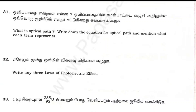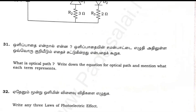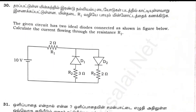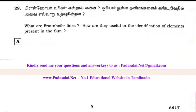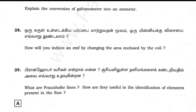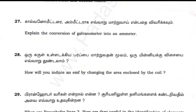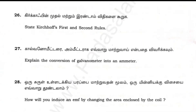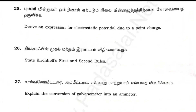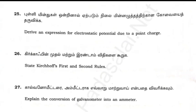Find the amount of energy released in joules when 1 kg of Uranium-235 undergoes fission. Write any 3 laws of the photoelectric effect — question 29. What is optics — question 30. Circuit diagram question. Faraday's lines of force — how will you induce an EMF by changing the area enclosed by the coil — question 29. Derive the expression for electrostatic potential due to a point charge — question 5-20.